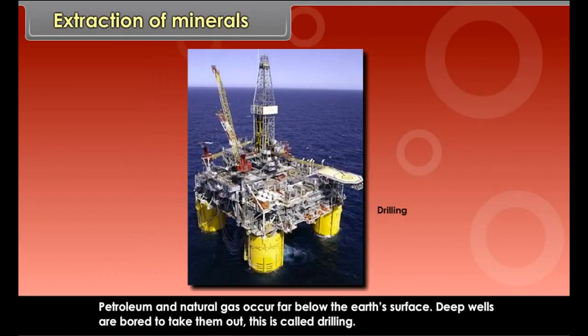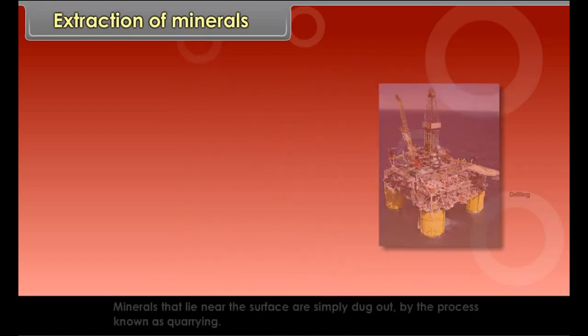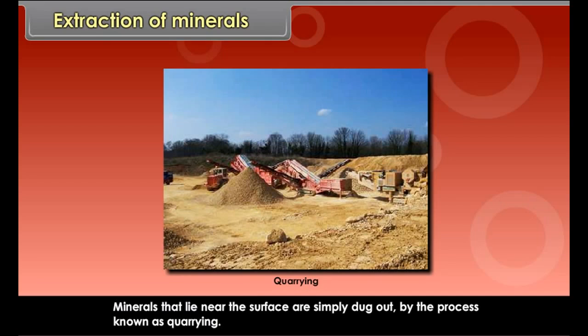Petroleum and natural gas occur far below the earth's surface. Deep wells are bored to take them out. This is called drilling. Minerals that lie near the surface are simply dug out by the process known as quarrying.